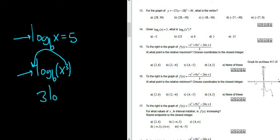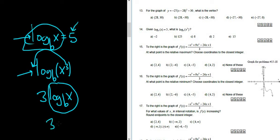So this is 3 log base b of x, using the power rule for logarithms. And we know what log base b of x is, it's right up here. It's equal to 5. So this is 3 times 5, and 3 times 5 is equal to 15.